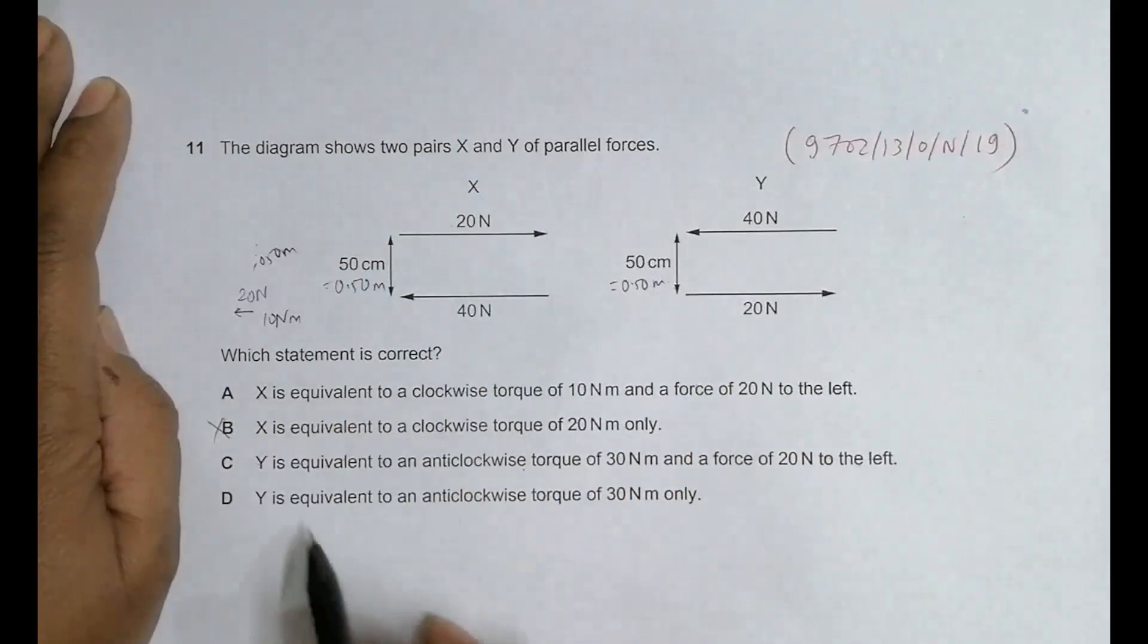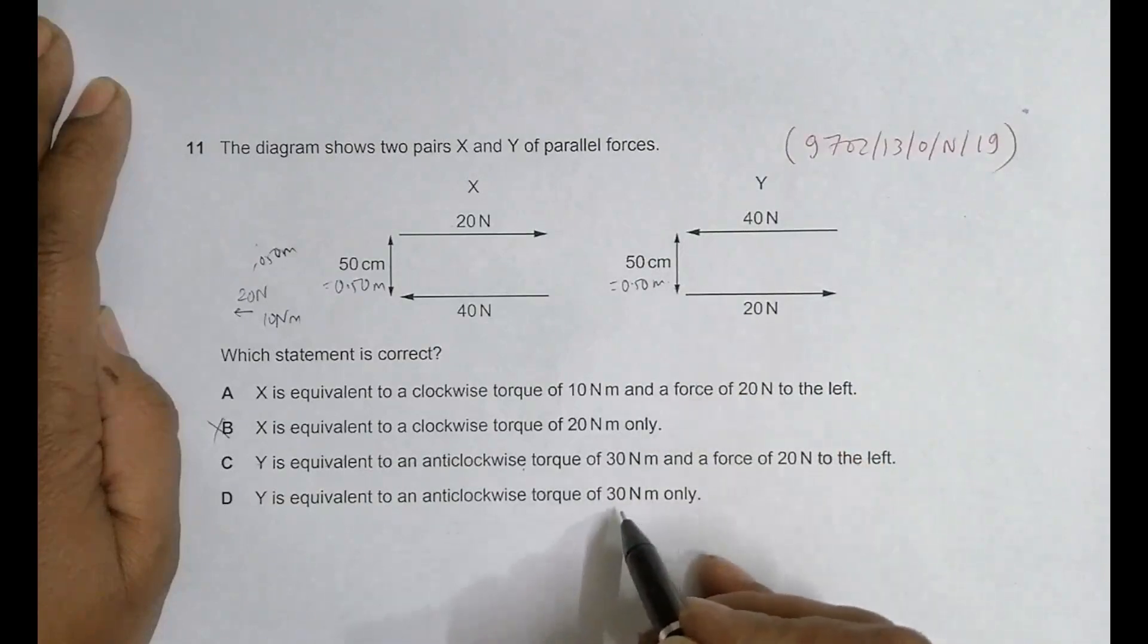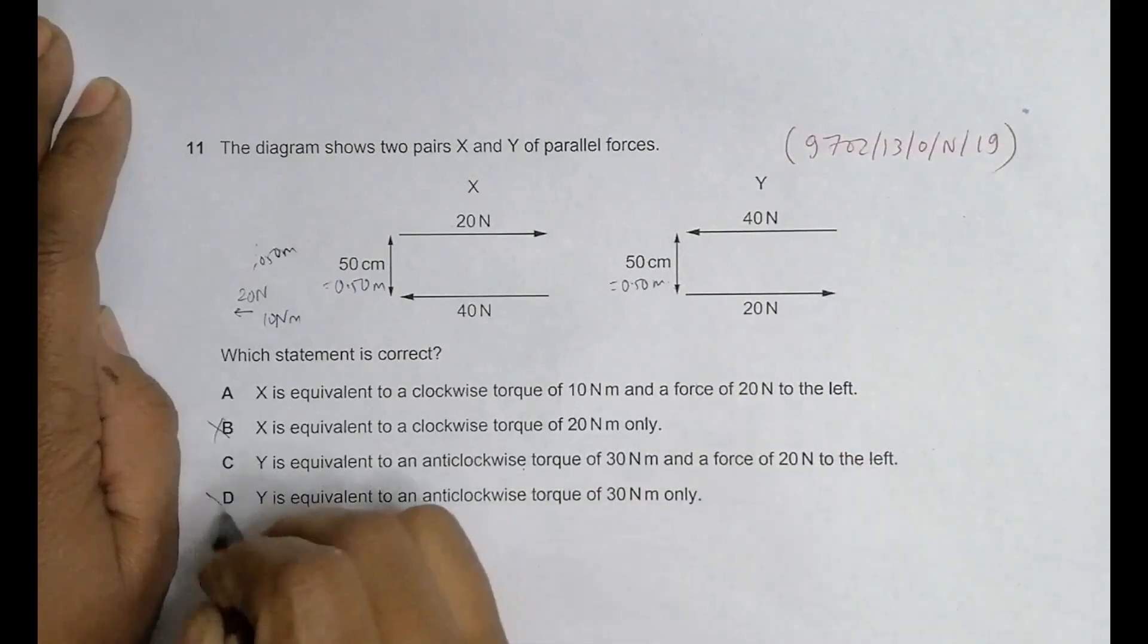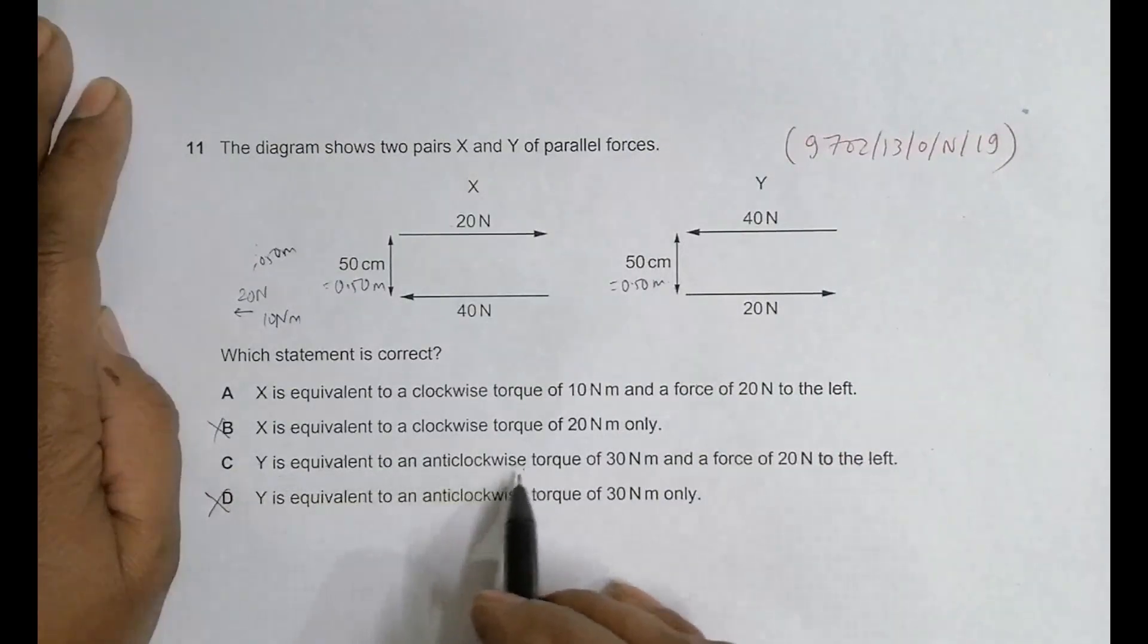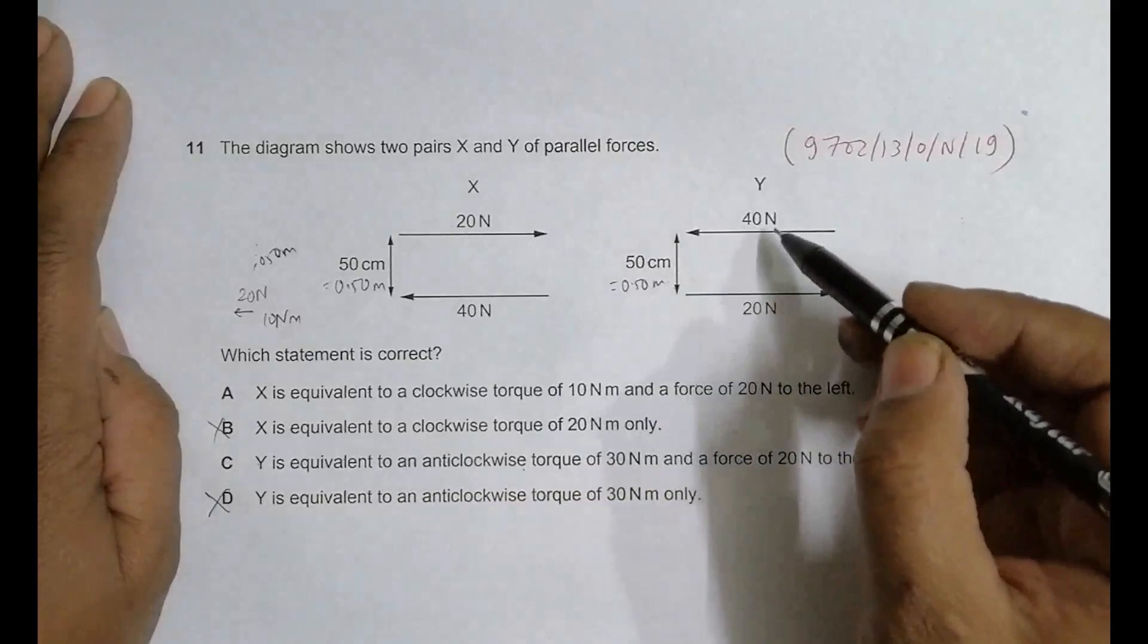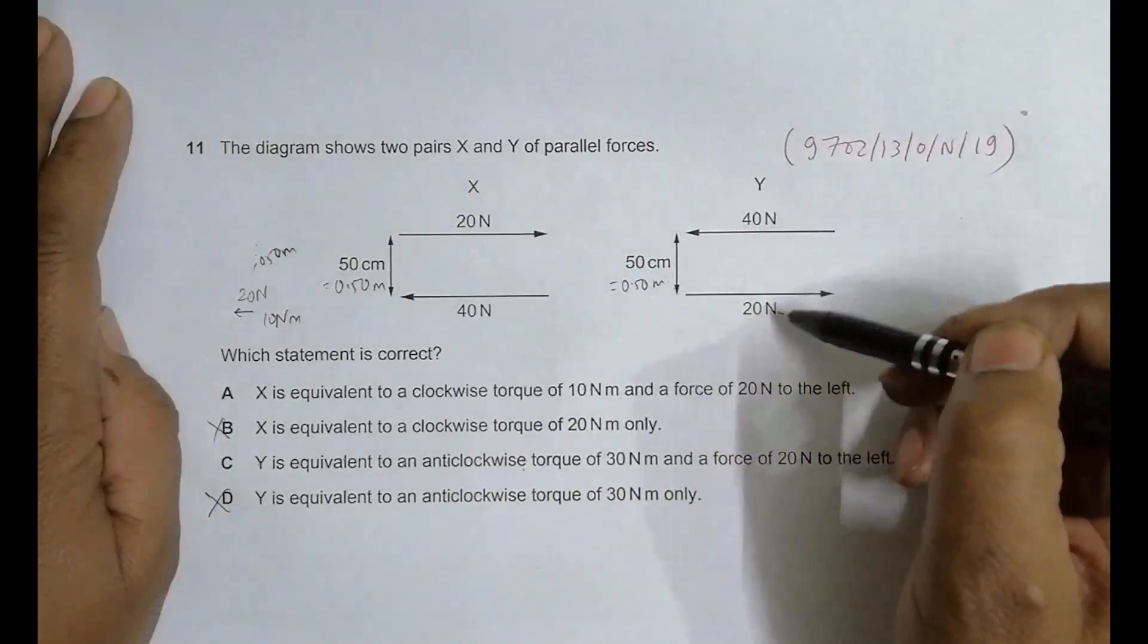Also we have one that says it's equivalent to an anticlockwise torque of 30 Newton-meters only, so it is incorrect. For pair Y, we have 40 here and 20 here, so the 40 is more than 20.